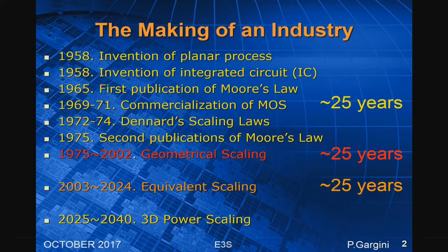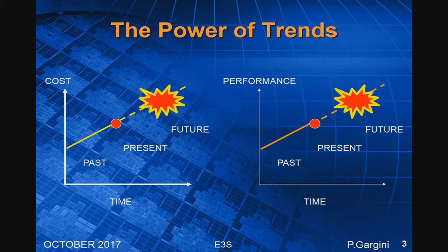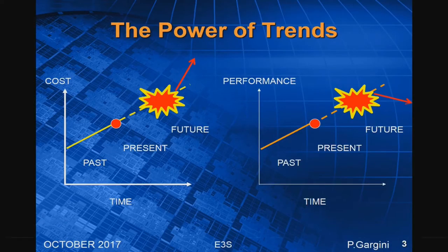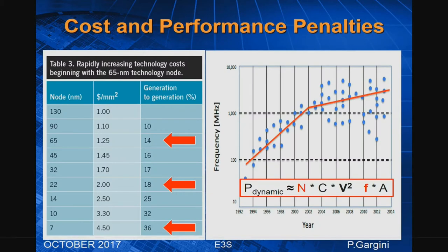Most people like to look at trends and say: this has been going on for 10 years, so I can extrapolate for the next 10 years — and that's the recipe for disaster. Normally, if something has been going on for 10 years, it's most likely going to fail in the next 10 years. People like to delay doing something about it, and there are penalties: if you delay and neglect to plan ahead, it will be more expensive and performance will go down.